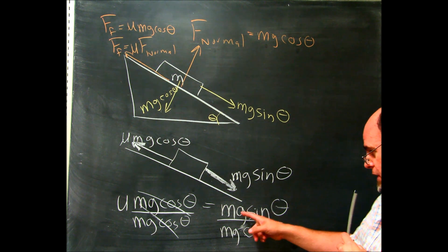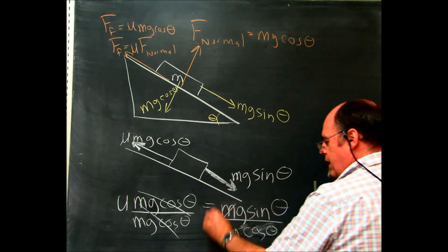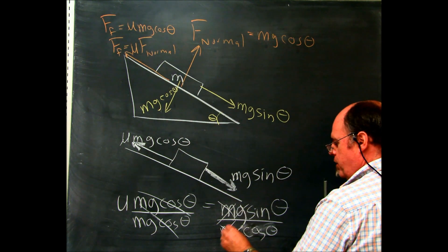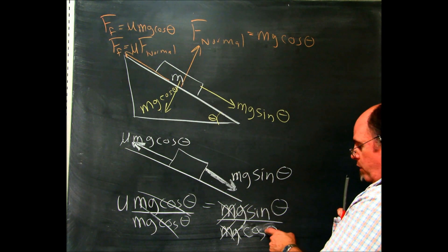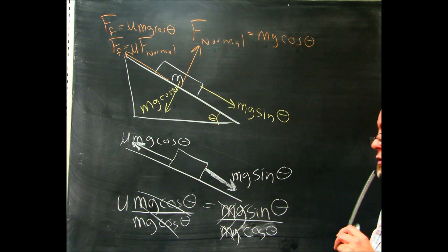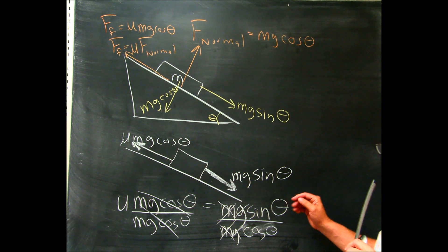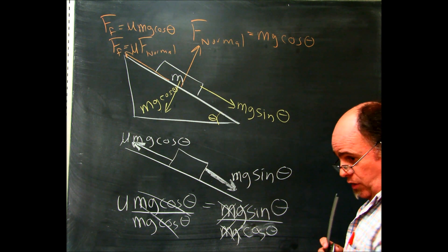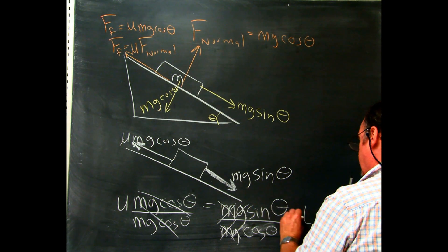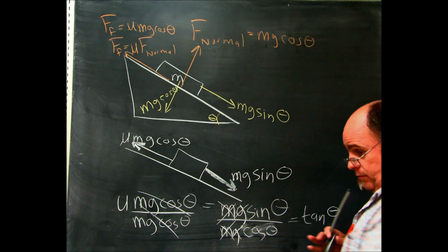And on the right side of the equation, we have this. The m's will cancel out with the m, the g will cancel out with the g, sine over cosine. In a trigonometry class, they will teach you about that. But there's a function. The sine over the cosine is called the tangent. So this equals the tangent of the angle.